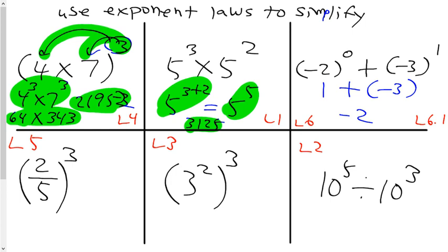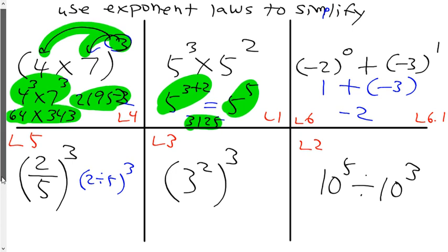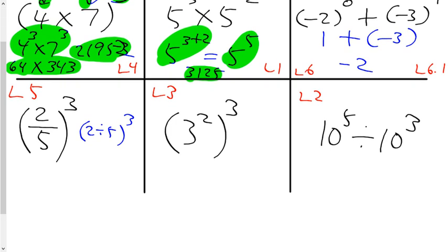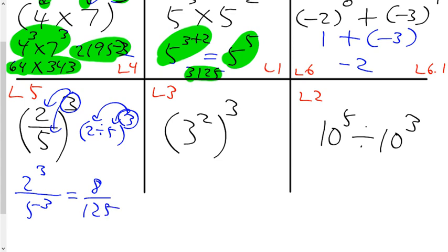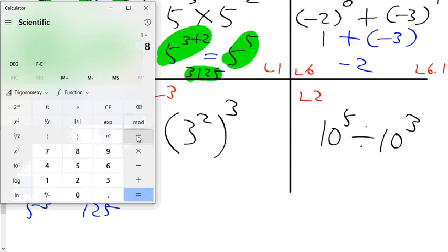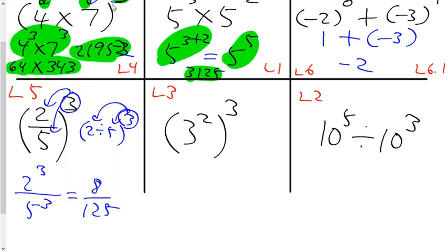Question five says two divided by five, remember it could have said this, it's the same question. I just want to make sure you do know that both those forms mean the same thing. And when you have that, this three can be reallocated there, or this three can be reallocated there. So two cubed over five cubed, which is eight divided by 125.